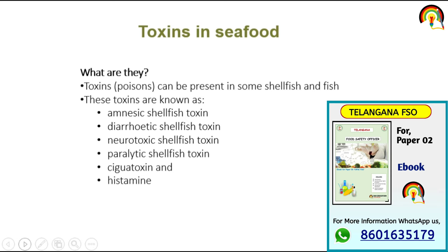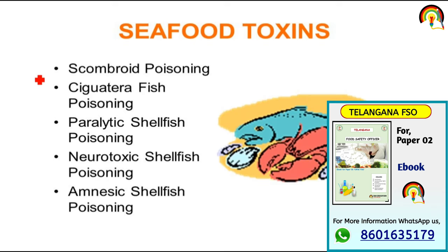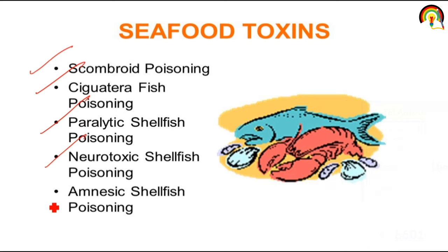Toxins can be present in some shellfish and fish. These toxins are also called amnesic shellfish toxin, diarrhetic, neurotoxic, paralytic, ciguatoxin, and histamine. The toxins that can be present in or produced by fishes are called seafood toxins. Seafood toxins include scombroid poisoning, ciguatoxin fish poisoning, paralytic shellfish poisoning, neurotoxic poisoning, and amnesic poisoning.